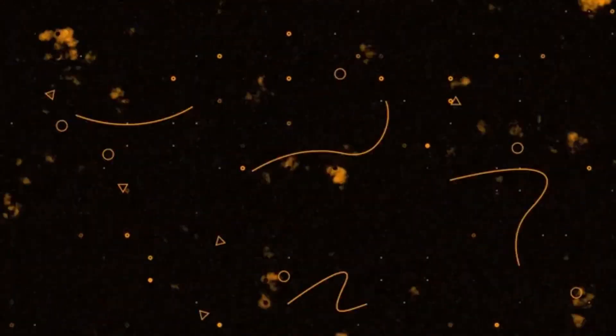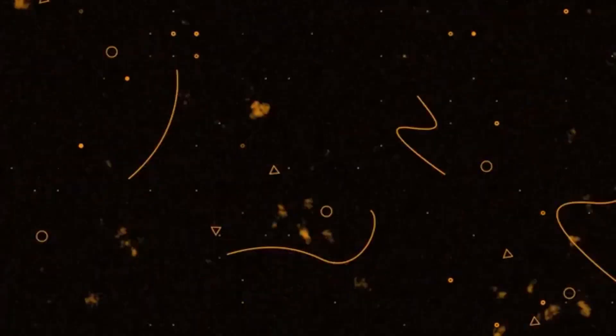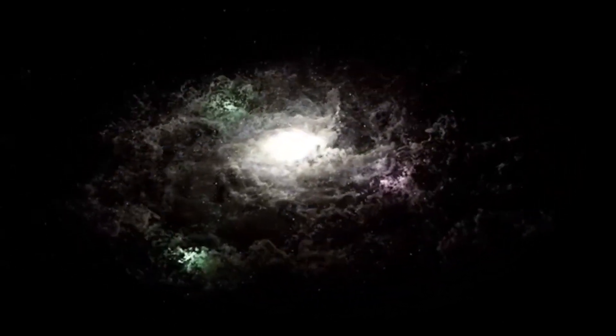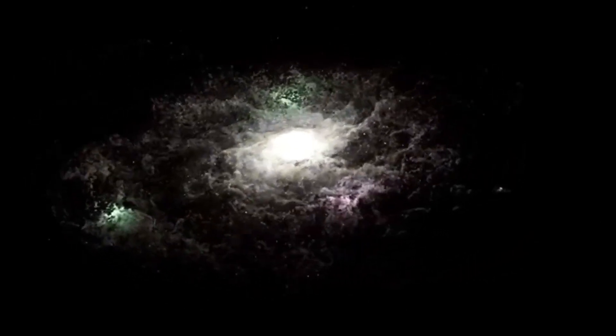To visualize this, imagine if our solar system were reduced to the size of a coin placed on a map of the United States, the entire Milky Way would then span the size of the actual continent. In that vast region, there would be around 300 billion star systems, and we are just one of them, adrift in a sea of unimaginable scale.